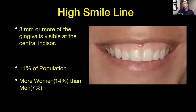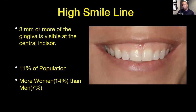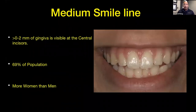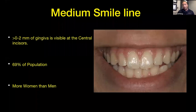The high smile line — also called the high aesthetic line or high E line — is when a patient shows three millimeters or more of gingiva above the central incisors when they smile. This affects about 11% of the population. As a periodontist, this is really important because if I'm replacing a front tooth with an implant, it's nice if they have a lower lip line. More people are in the medium category, showing zero to two millimeters of gingiva in their high smile line — about 69% of the population.